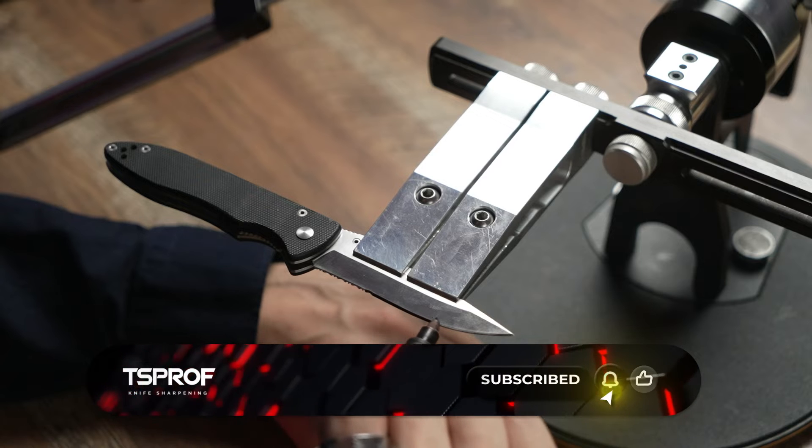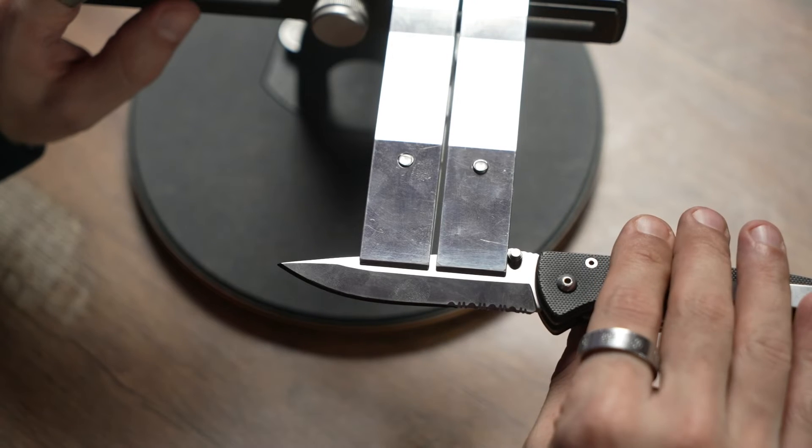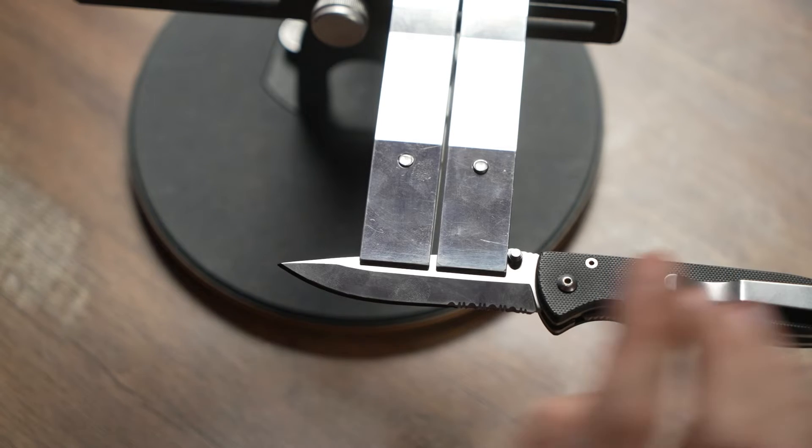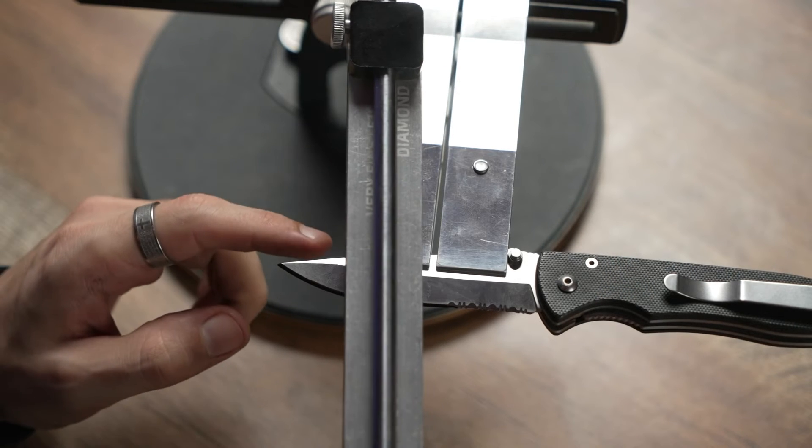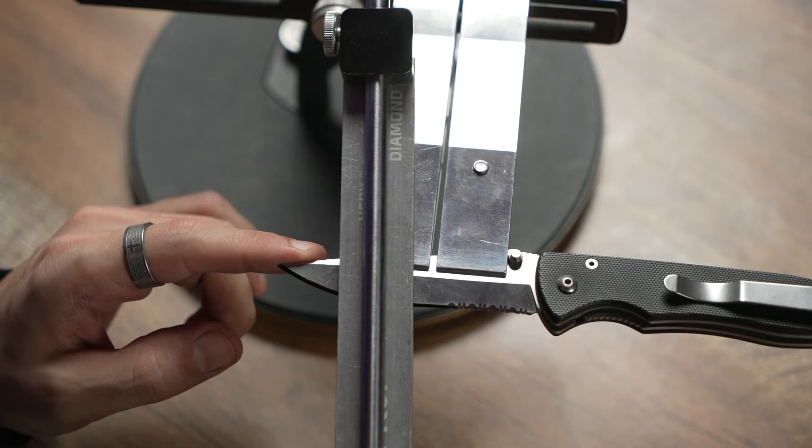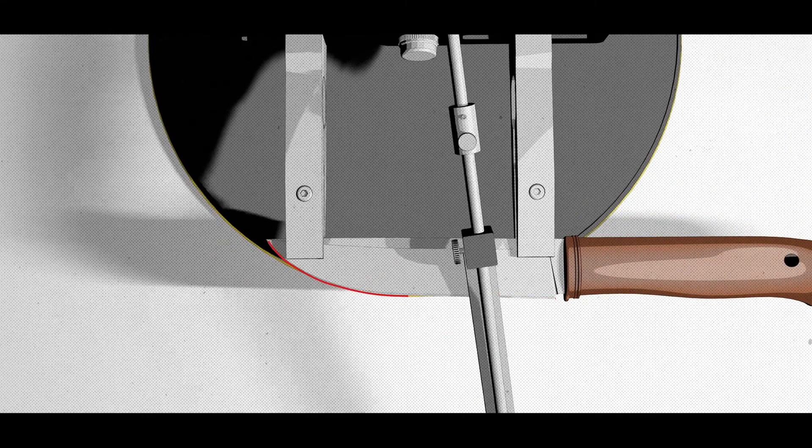We will be able to see if we are removing the metal from the edge itself then the marker will be at the top side of the bevel, or if we are processing the top border, in this case the marker will remain on the cutting edge.